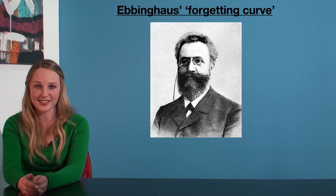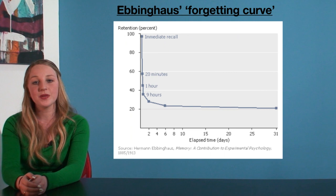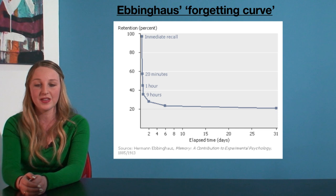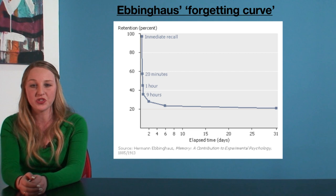Possibly Ebbinghaus' greatest legacy is his forgetting curve, which looks a little bit like this. As can be seen on the diagram, Ebbinghaus suggested that most information is forgotten in the initial period of learning. In particular, the first 20 minutes are particularly prone to forgetting. After the first one hour since learning, the majority of information is forgotten.